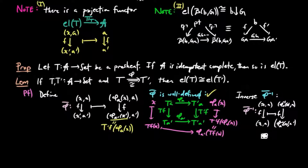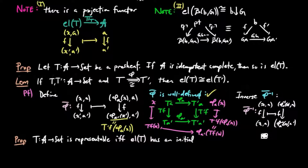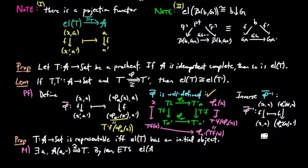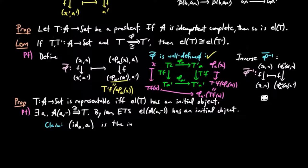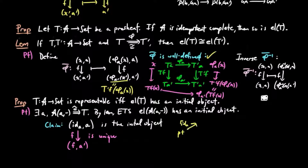This allows us to easily prove that T is a representable pre-sheaf on A if and only if the category of elements of T has an initial object. For the proof, since T is representable, there exists an A-object A and a natural isomorphism from the representable on A to T. Thus, by the lemma above, it is enough to show that the category of elements of the representable on A has an initial object. We claim that the identity on A is the initial object. Indeed, for each object FA', we have the unique morphism F to it, as indicated by the diagram and the fact that the Yoneda embedding is full and faithful.